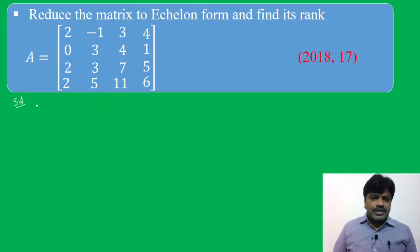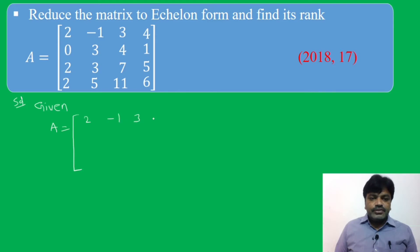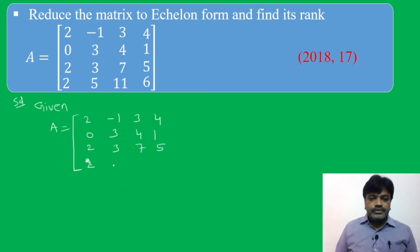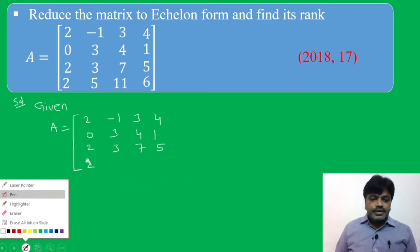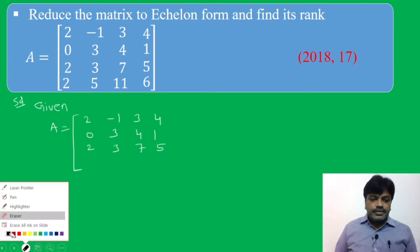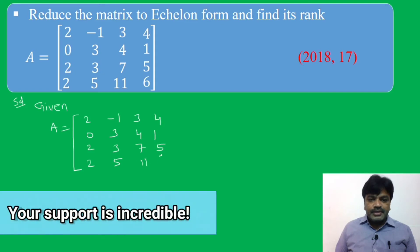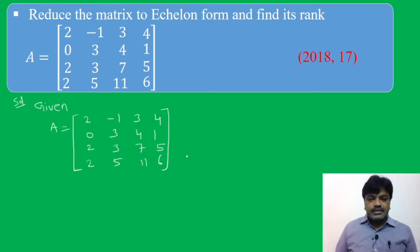First, write the given matrix. Given A is equal to: 2, -1, 3, 4 / 0, 3, 4, 1 / 2, 3, 7, 5 / 2, 5, 11, 6.